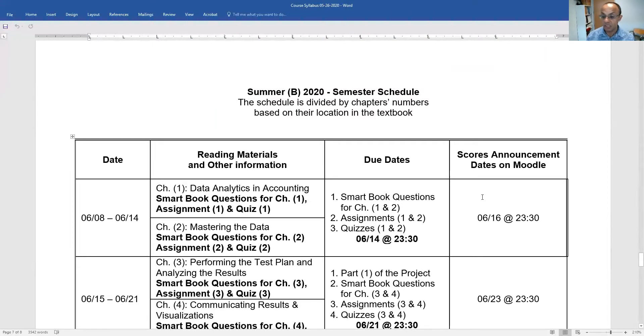So what do you expect to do on a weekly basis? In the first week, which will start next Monday, you are required to read chapter one and two from the textbook and answer the smart book questions, the assignments and the quizzes for chapter one and two. The due date for all this material is June 14.